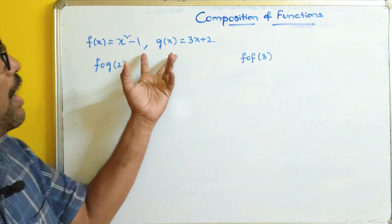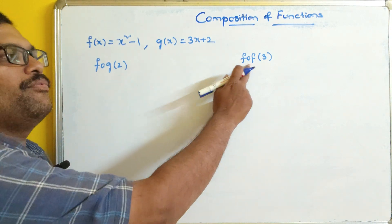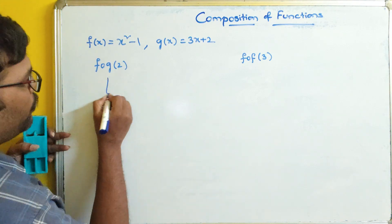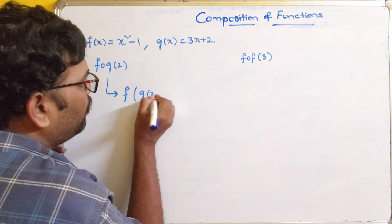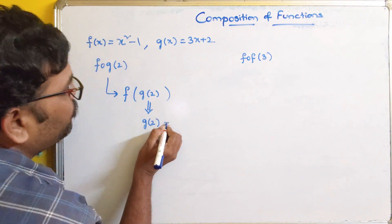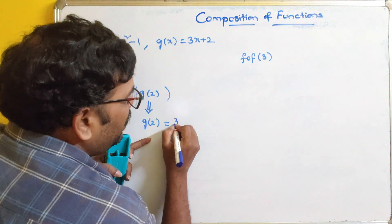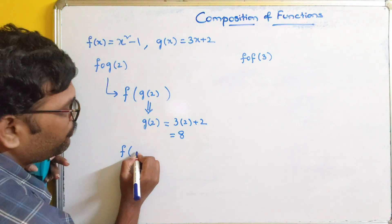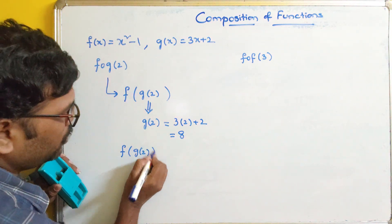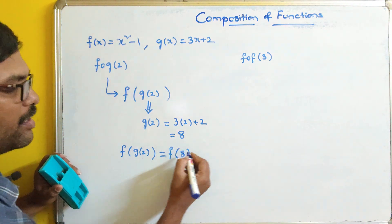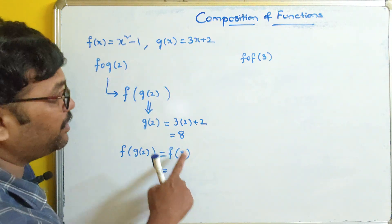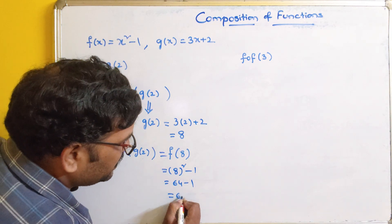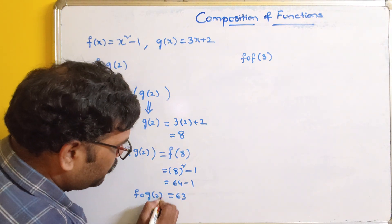Now let us see another example. Here we have two functions and we have to find f of g of 2 and f of f of 3. First, f of g of 2 — we calculate g of 2 first. So 3 into 2 plus 2 which becomes 8. Now we substitute in f: f of 8 gives x squared minus 1, so 8 squared minus 1 which becomes 64 minus 1, that is 63. So f of g of 2 is 63.